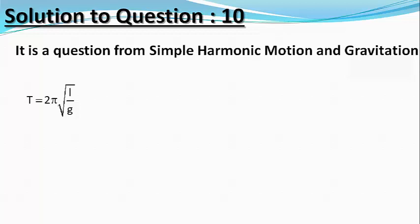Then T_P divided by T_E equals square root of g_E divided by g_P. This is Equation 1.